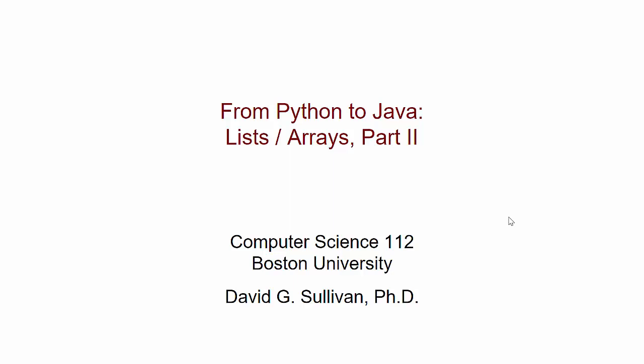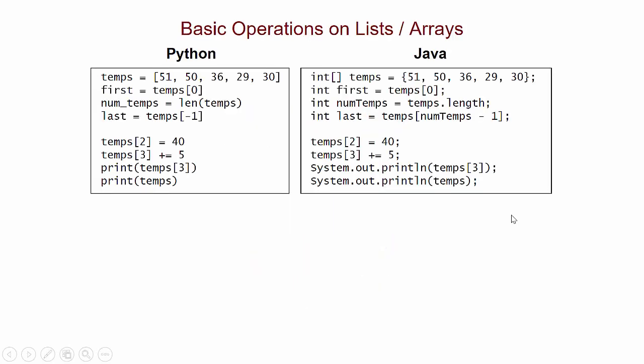In this video, we're going to continue our comparison of Python lists and Java arrays. In the previous video, we looked at these two code fragments and compared them. The Python one works with a list of integers that represents a set of temperature values. The Java equivalent works with an array of integers.